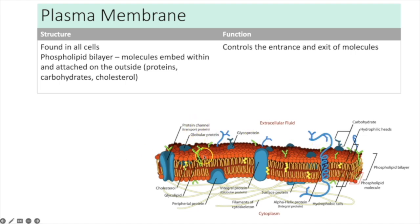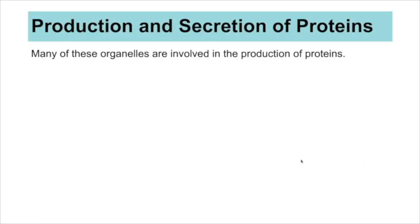The plasma membrane is found in all cells and forms the cell surface membrane. It is made up of a phospholipid bilayer with embedded molecules including channel proteins, carrier proteins, receptors, glycoproteins, and cholesterol — which affects fluidity and therefore permeability. All of these structures together help to control what can enter and exit the cell.